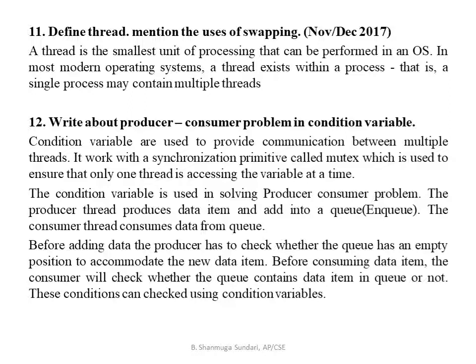The producer-consumer problem uses condition variables. A condition variable works with the synchronization primitive called mutex, which ensures that only one thread is accessing the variable at a time. The producer produces data items and adds them into a queue (enqueue), and the consumer thread consumes data from the queue. The producer checks whether the queue has an empty position before adding, and the consumer checks whether the queue contains a data item before consuming — these conditions are checked using the condition variable.